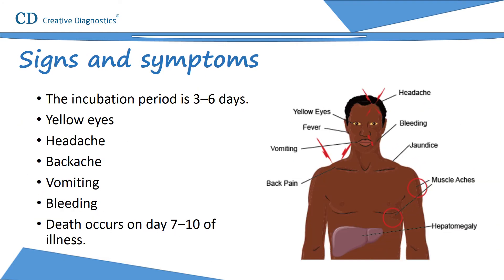The incubation period of yellow fever is three to six days. At the abrupt onset, the patient has fever, chills, headache, dizziness, myalgia, and backache, followed by nausea, vomiting, and bradycardia. During this initial period, which lasts several days, the patient is viremic and a source of infection for mosquitoes. Most patients recover at this point.